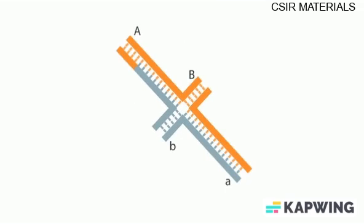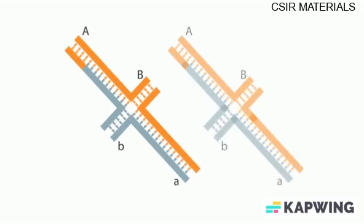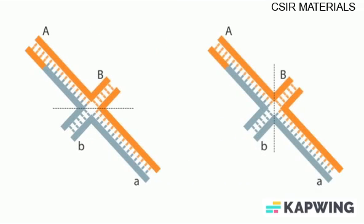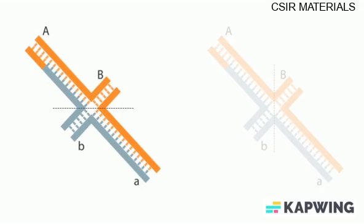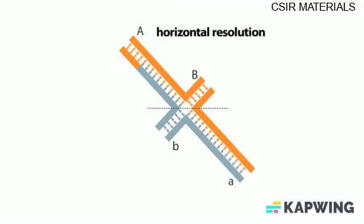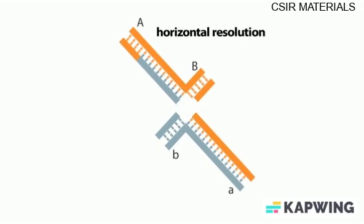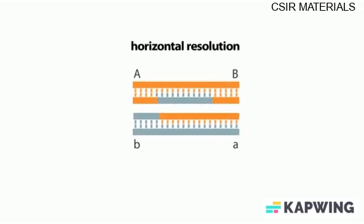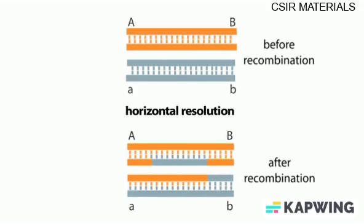Looking at the three-dimensional chi form of the Holliday structure shows that there are two possible cleavages in different orientations that have very different outcomes. The left-right cut, or horizontal resolution, gives two molecules that have exchanged short segments. The exchanged strands have similar sequences, so the effect on the genetic constitution of each molecule is relatively minor, and the strands carry the same alleles as before. This type of resolution is not thought to occur very often.